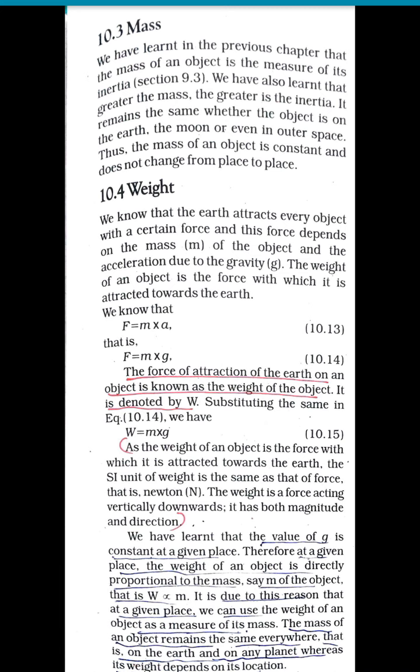The value of acceleration due to gravity is constant at a given place. Therefore, at a given place, the weight of an object is directly proportional to its mass. This is why we can use weight as a measure of mass at a particular place. The mass of any object remains the same everywhere — whether on earth, the moon, Mars, or any planet — but the weight of the object depends upon its location.